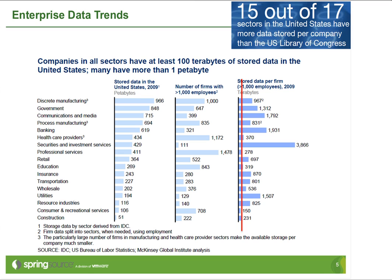Looking at enterprise data trends, here's a survey done by IDC showing numbers from 2009. On the right is a red line representing about 300 terabytes — the size of data stored in the Library of Congress. Across different US company sectors, 15 out of 17 companies at the time of the survey were already storing more data than exists in the US Library of Congress. In sectors like security and investment services, it's considerably higher — almost four petabytes at the time of the survey. The most common type of data being stored across all sectors is semi-structured textual data.